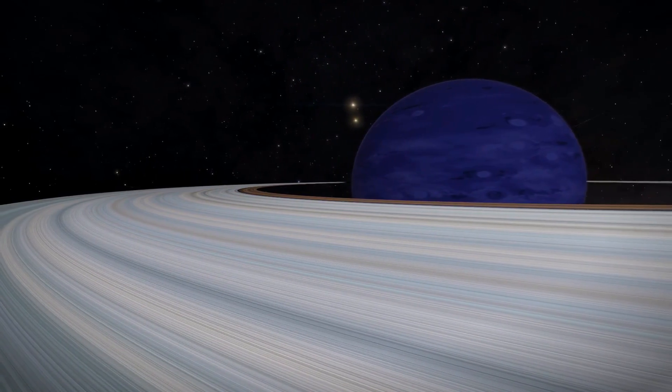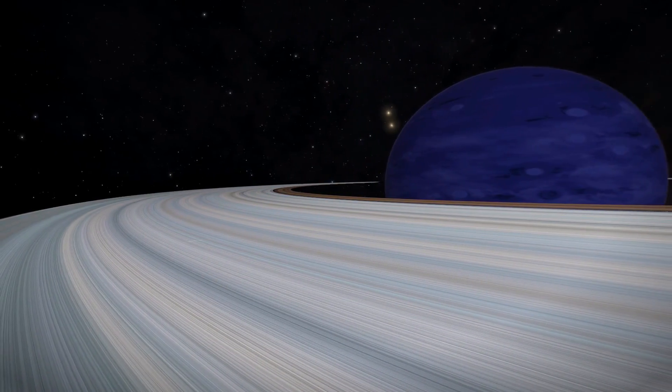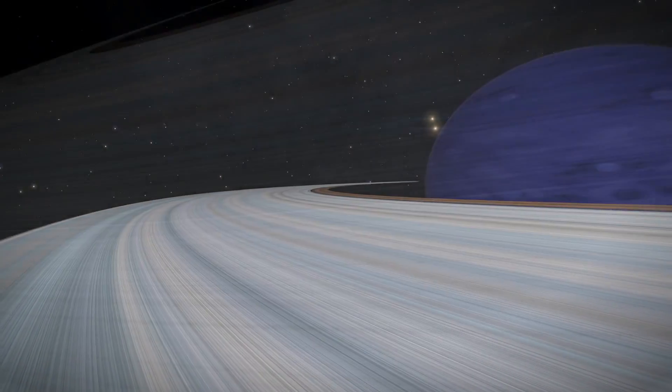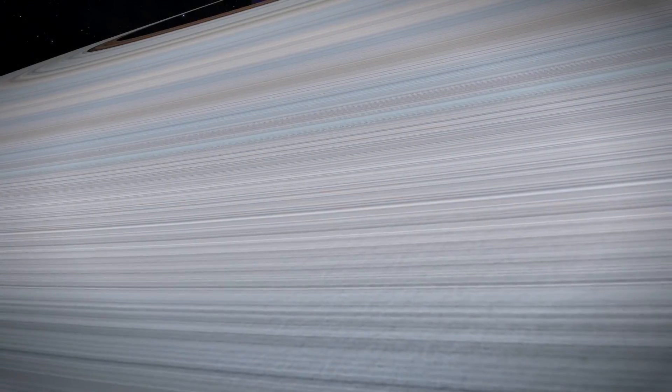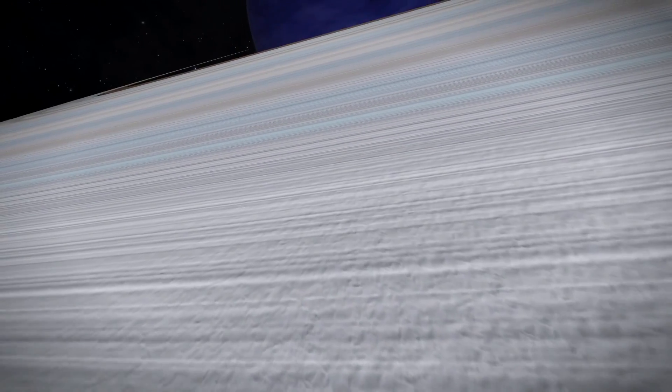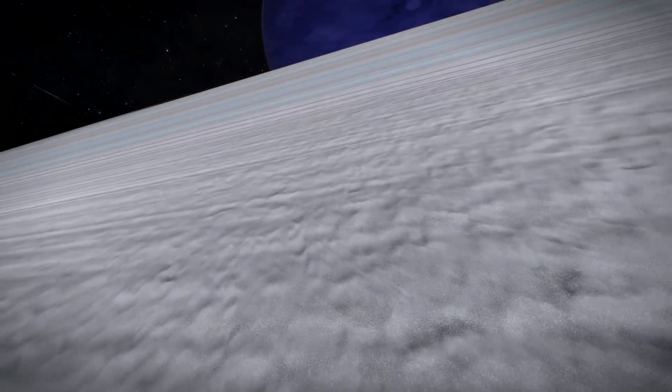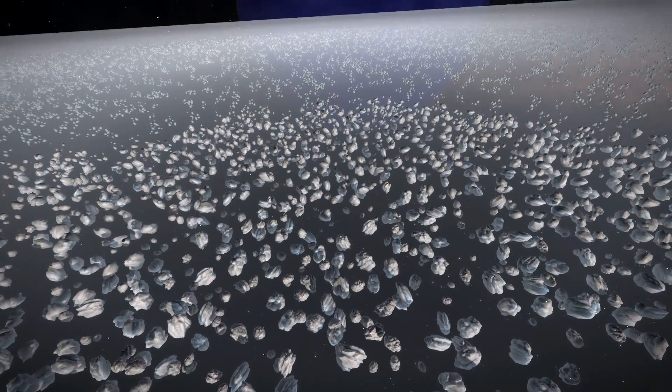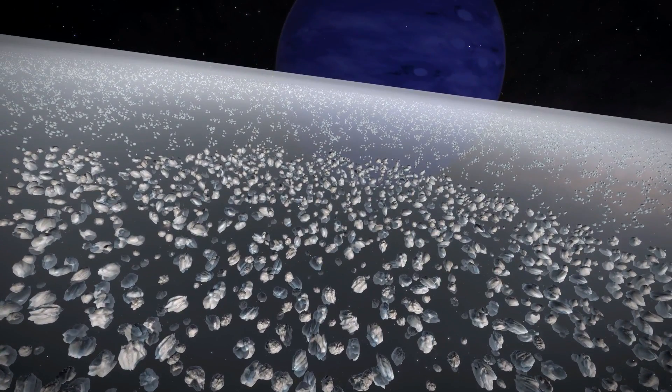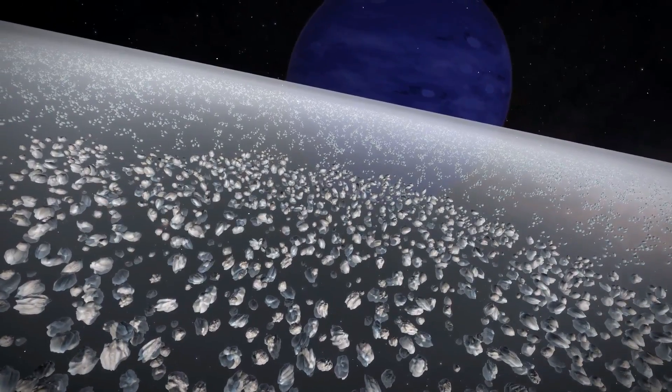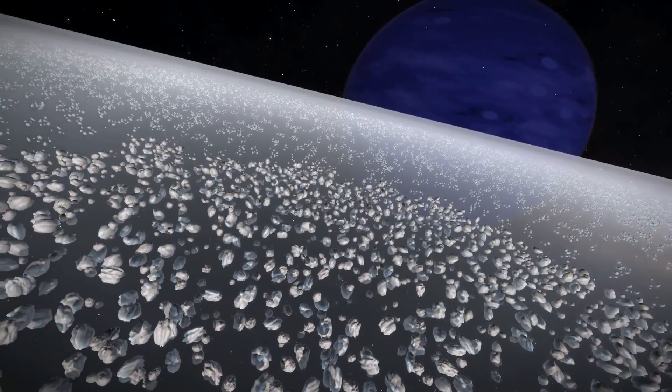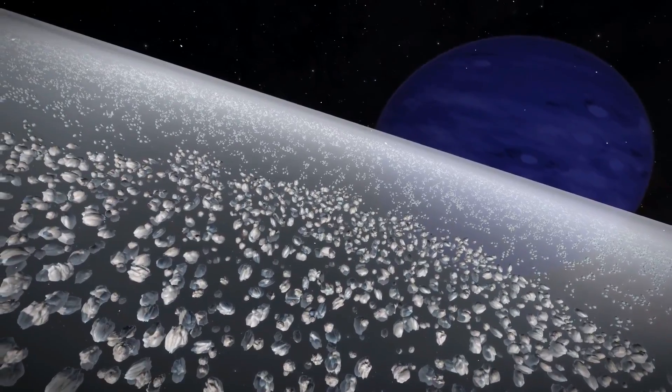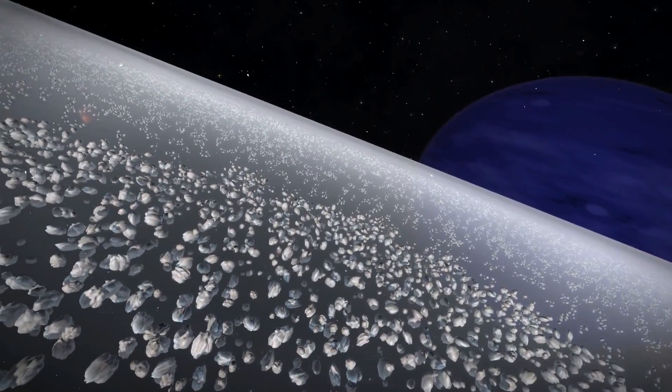Now most rings are made up of a collection of rocks, dust, and ice and they have varying sizes. They can be very big or very small, but I thought I'd jump into this game Elite Dangerous because you can actually get very close and get a huge sense of scale.